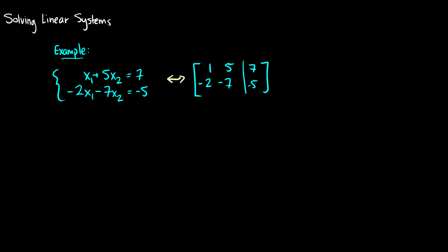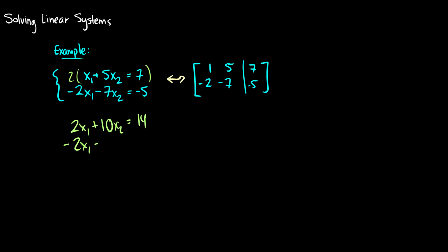What can we do to linear systems? If you remember from high school, we can multiply an equation and subtract or add it. I'm going to multiply the first equation by 2 so that we can eliminate the x1s and be left with only x2s. So 2 times x1 is 2x1, 2 times 5x2 is 10x2, and 2 times 7 is 14. We're not touching the second equation so I'll just copy it as it is.